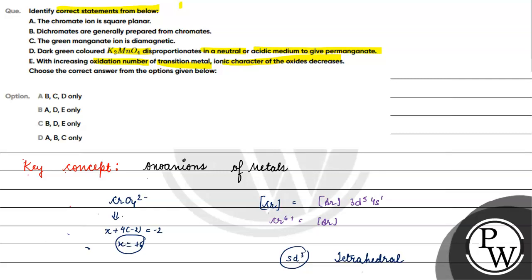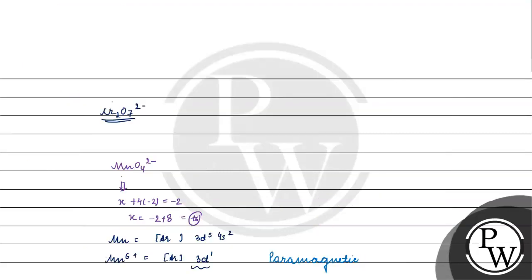Option E: with increasing oxidation number of transition metal, ionic character of the oxides decreases. This statement is also completely correct. As oxidation number increases, the size of the cation decreases. The higher the oxidation number, the more electrons are removed. The effective nuclear charge increases, so the size of the cation decreases.